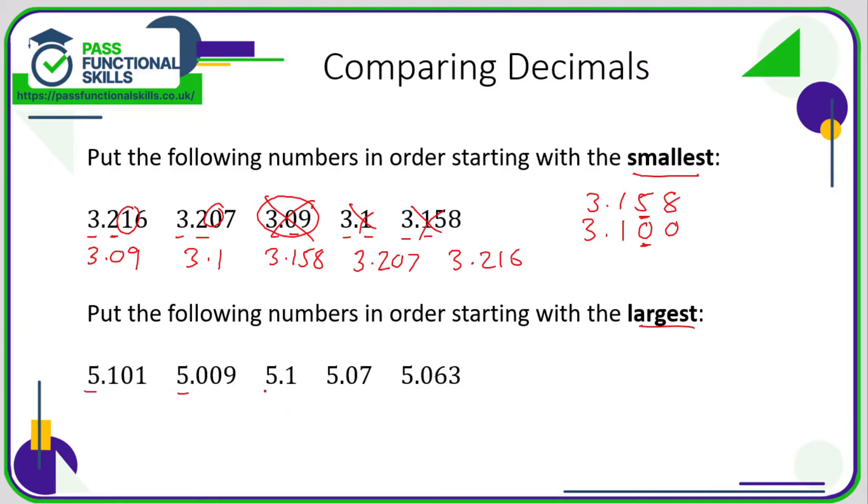They all begin with a five, so let's have a look at the tenths column. We've got a one, zero, one, zero, zero. So one is greater than zero, so we want what's larger out of five point one zero one and five point one. Again, it can be confusing when we're comparing decimals of different lengths, so fill the gaps with zeros.